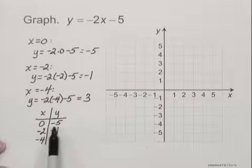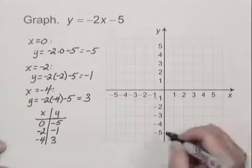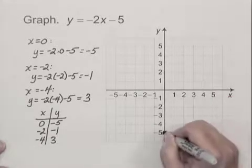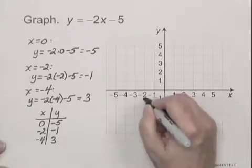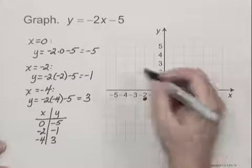This gives us 3 ordered pairs: 0, negative 5; negative 2, negative 1; and negative 4, 3.